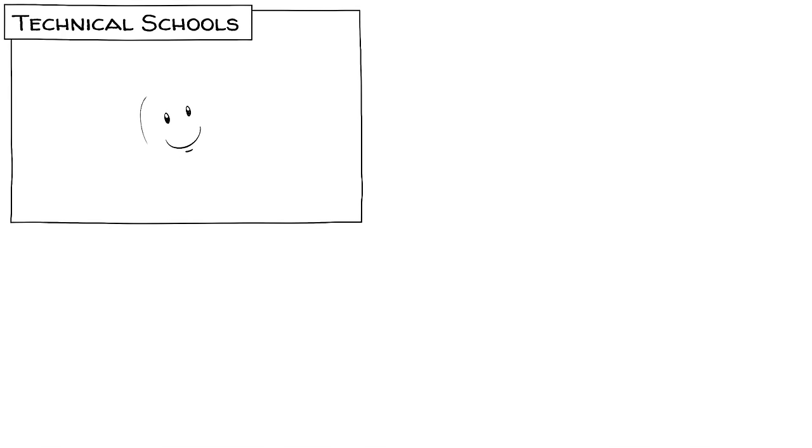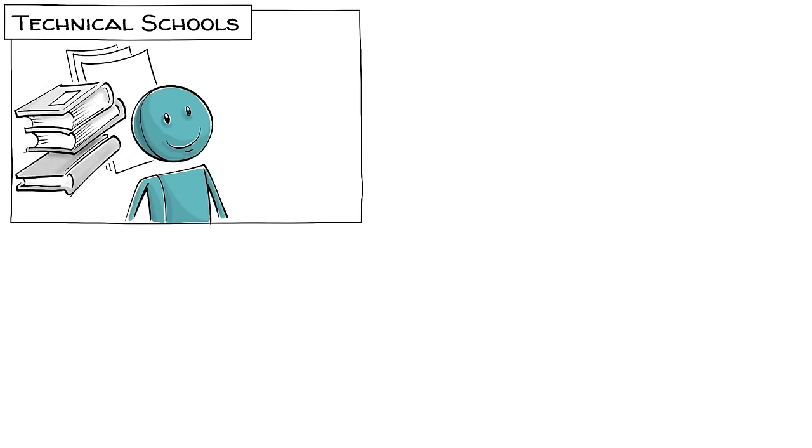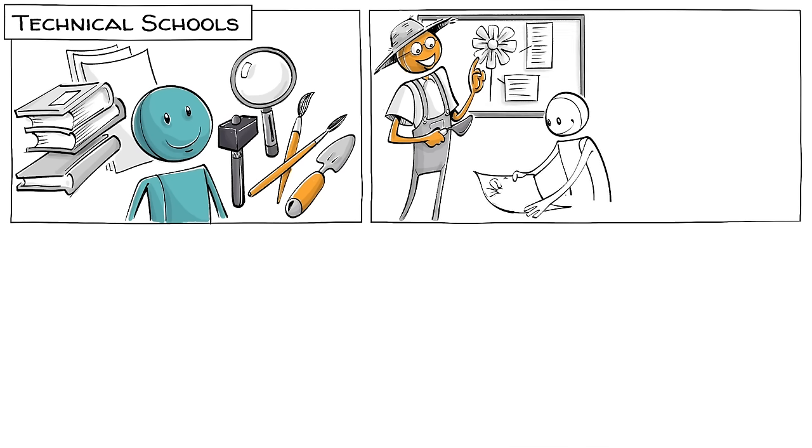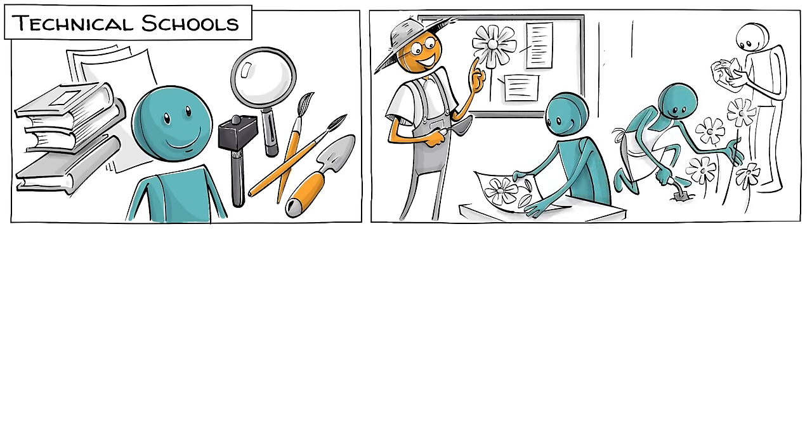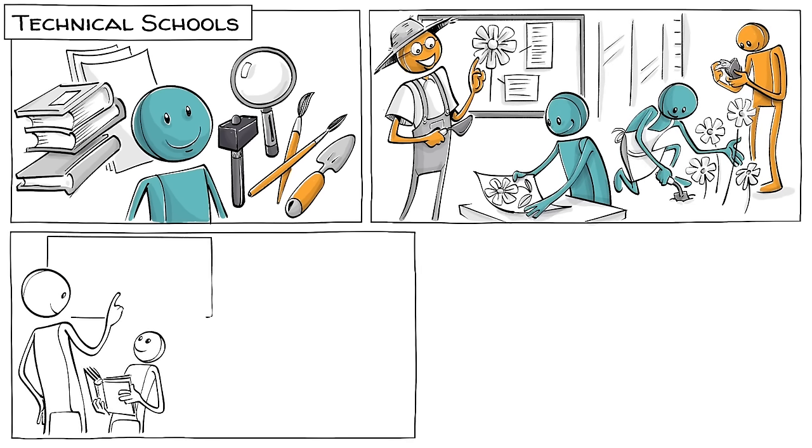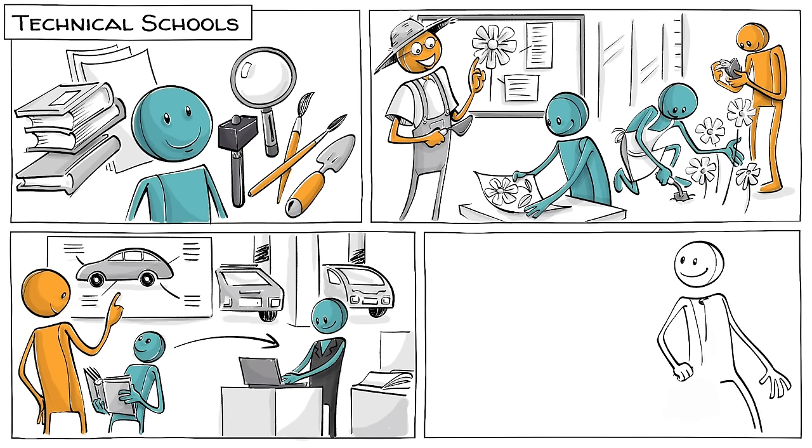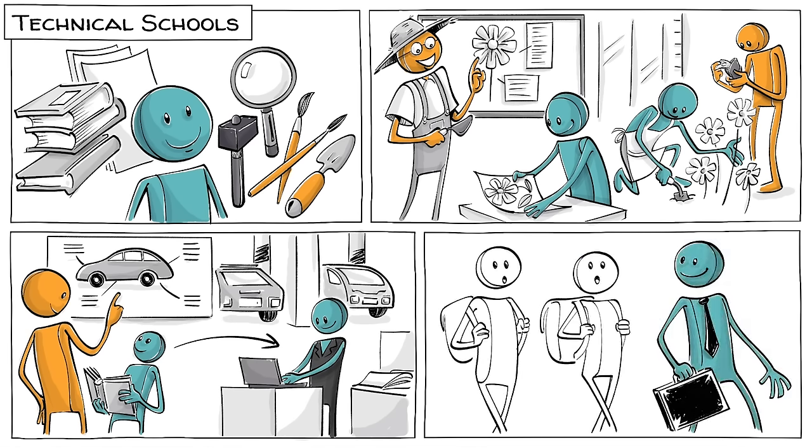Technical schools offer young adults an educational experience that blends theoretical knowledge with real-work application. Teachers are often professionals in their field and when done right, students alternate classwork with on-the-job training at a real company. Those who learn at a technical school are usually ready to work in the field they were trained in, starting their professional life often earlier than others.